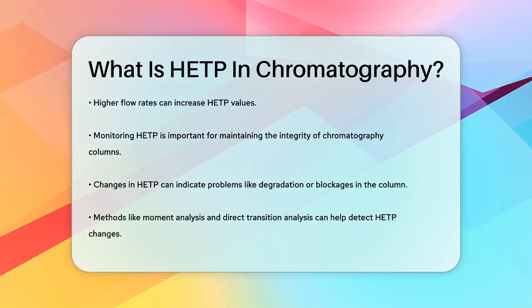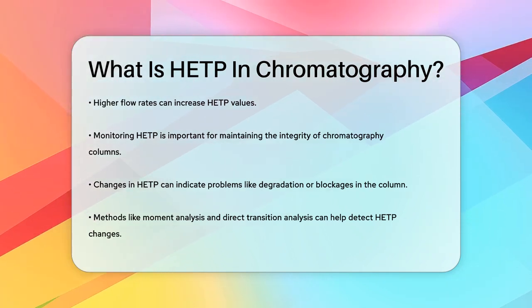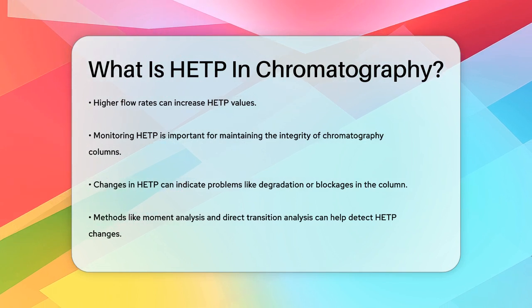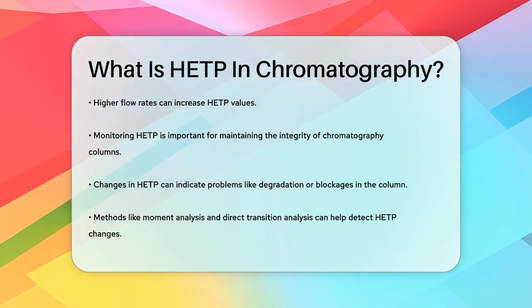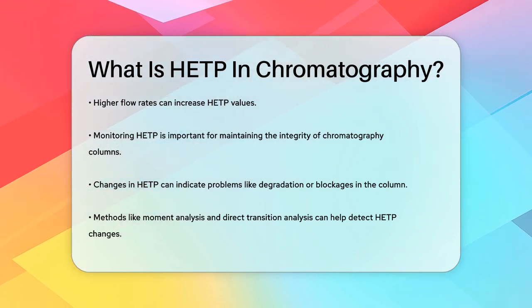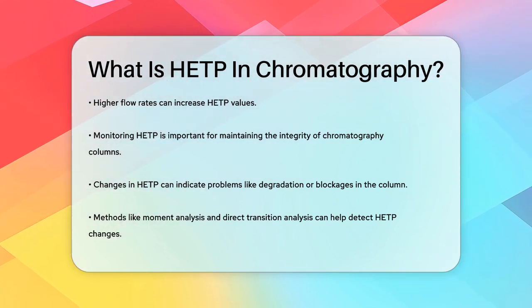So HETP is not just a technical term — it's a key metric that helps chemists optimize their chromatography processes and ensure they get the best possible results from their experiments.